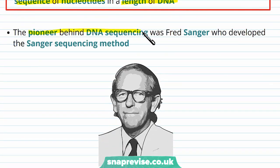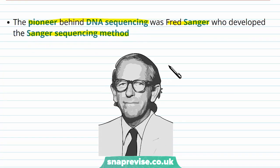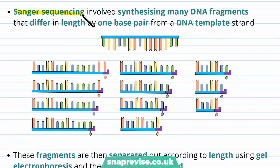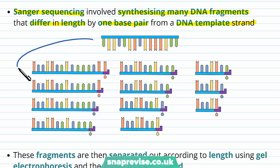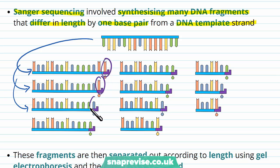The pioneer behind DNA sequencing was a man called Fred Sanger, who developed the Sanger sequencing method. The Sanger sequencing method basically involved synthesizing lots and lots of DNA fragments that differed in length by just one base pair from a DNA template strand. We would make lots of template strands which were complementary to the original strand, with different fragments differing by one nucleotide every time.